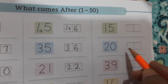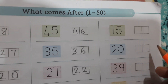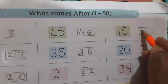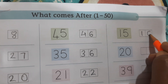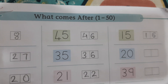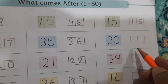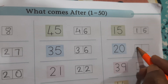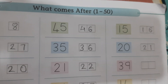After 45? After 45? [Student says 15.] 1, 5, 15. 1, 6, 16. 1, 6, 16. 1, 6, 16. After 20? After 20? 21. Very good. 21.